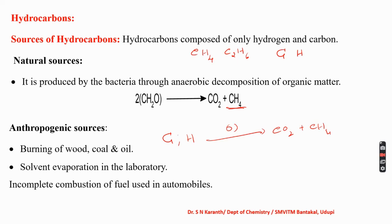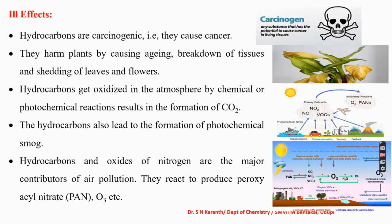Another source of hydrocarbons is the incomplete combustion of fuel used in automobiles. Automobiles normally use petrol or diesel, and sometimes incomplete combustion takes place, resulting in hydrocarbon production. So the four major sources of hydrocarbons are: anaerobic decomposition of organic matter, burning of wood/coal/oil, solvent evaporation in the laboratory, and incomplete combustion of fuel in automobiles.